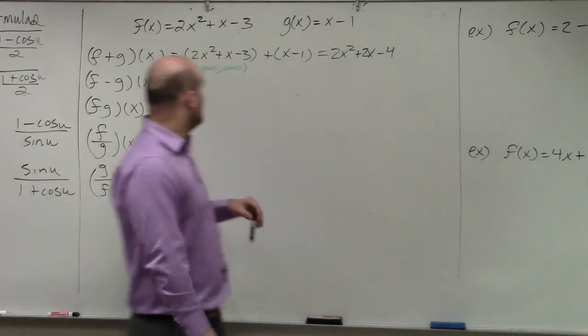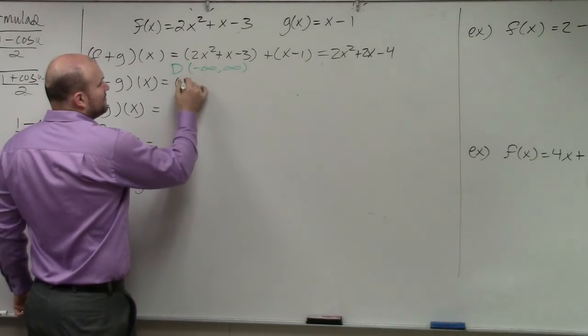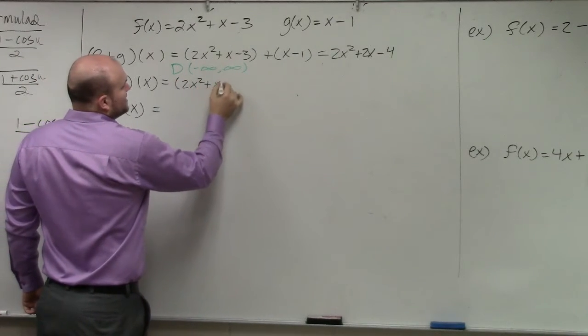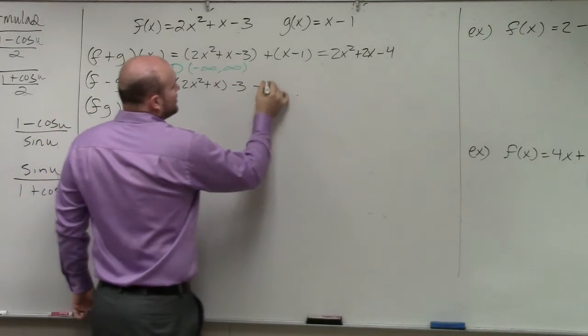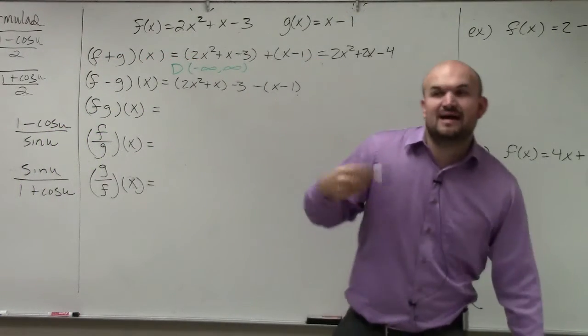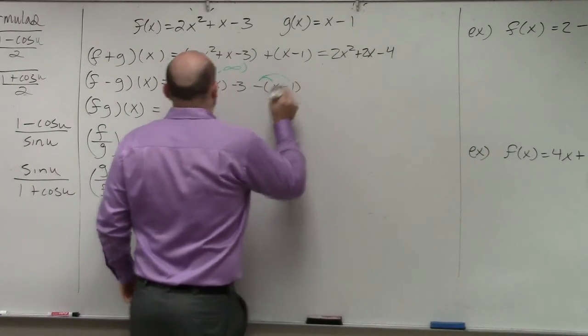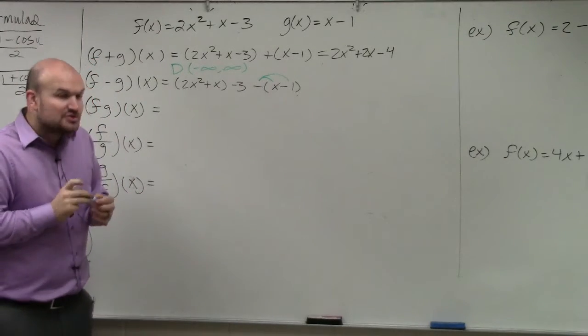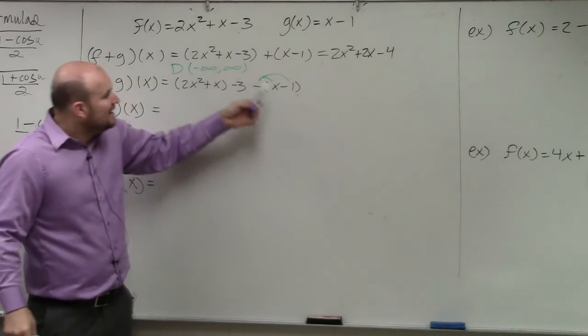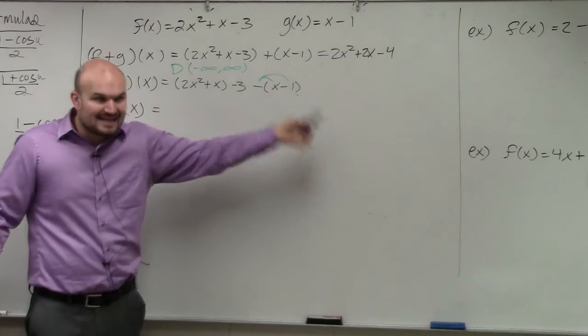The next one is going to be subtraction. Again, I would highlight putting them in parentheses. 2x squared plus x minus 3. Now you're minusing x minus 1. The reason why this is important is because I'm not just subtracting x, I'm subtracting x minus 1. So I have to make sure I apply my distributive property. So really, you're subtracting an x and you're subtracting a negative 1, which is the same thing as adding a 1.